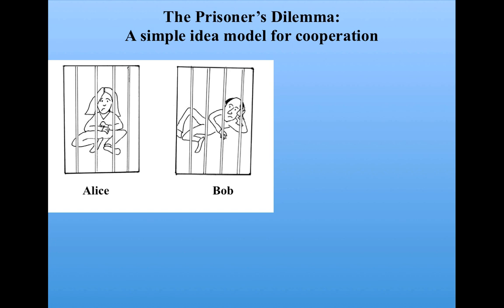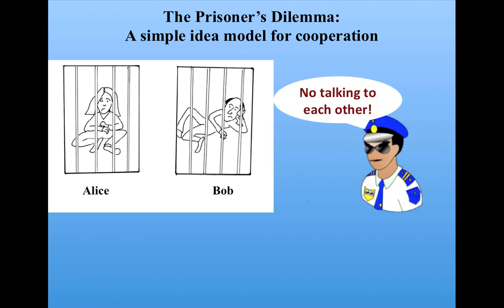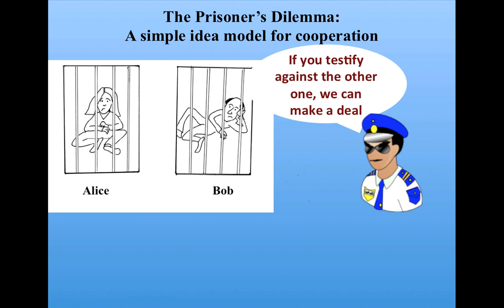Alice and Bob have collaborated on committing a crime, and they've been caught and thrown in jail. They're not allowed to talk to each other — there's no possible way that they can communicate — and the police are offering a deal that involves one testifying against the other. The police don't have quite enough evidence to convict them on the charge they want, so they're going to try to get one of them to testify against the other.